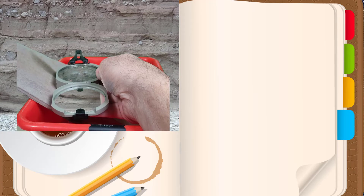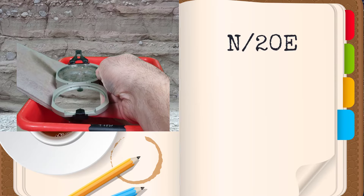The final example should have been a little easier, because the strike is pointing straight ahead or to the north. The dip looks a bit lower than some of the other examples, and so if you set about 20 degrees to the east, you'd be correct. This is written as N/20E in the quadrant system, and as 0/20E in the azimuth system.